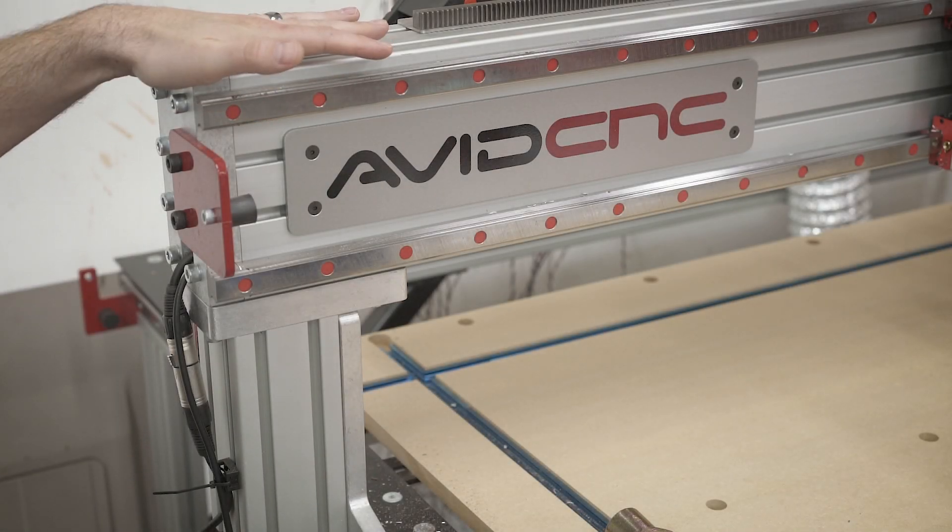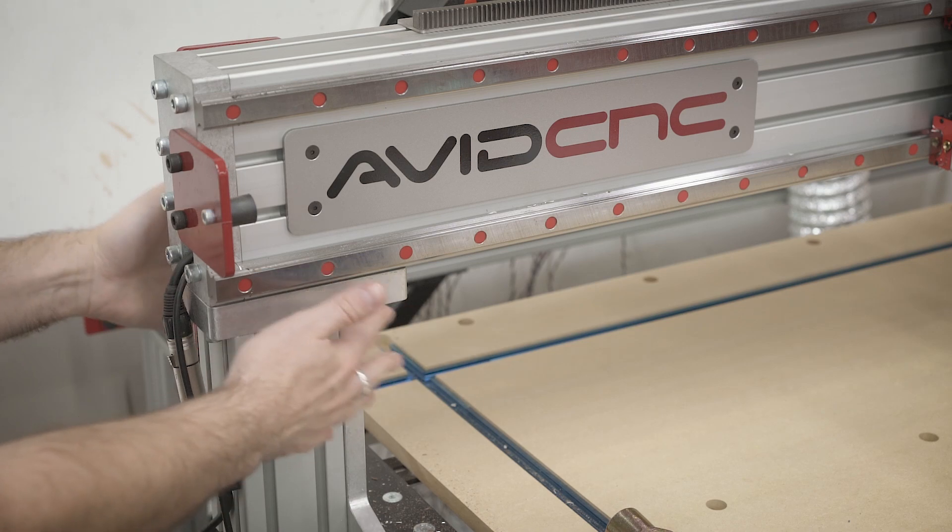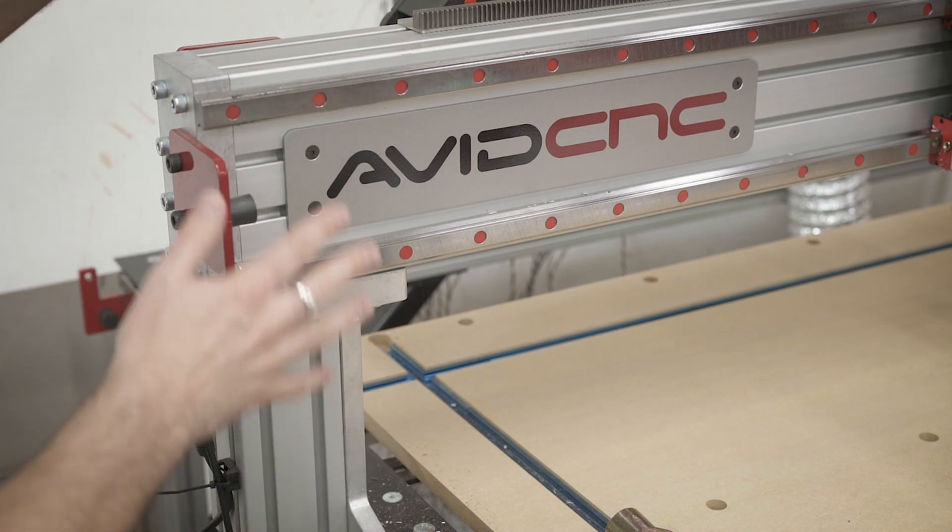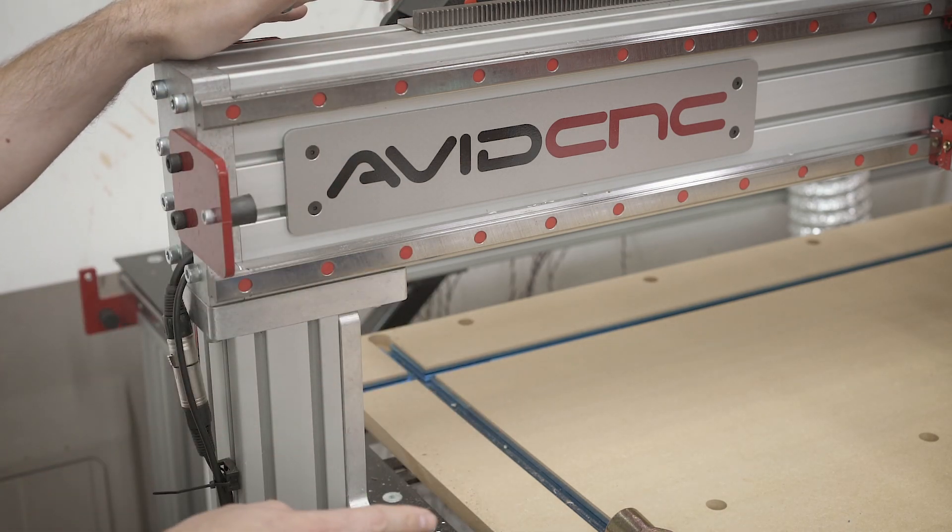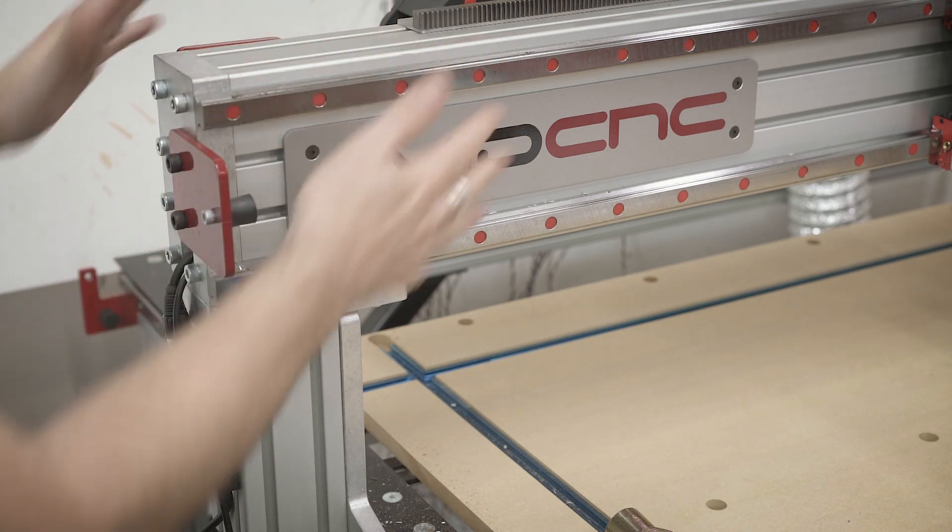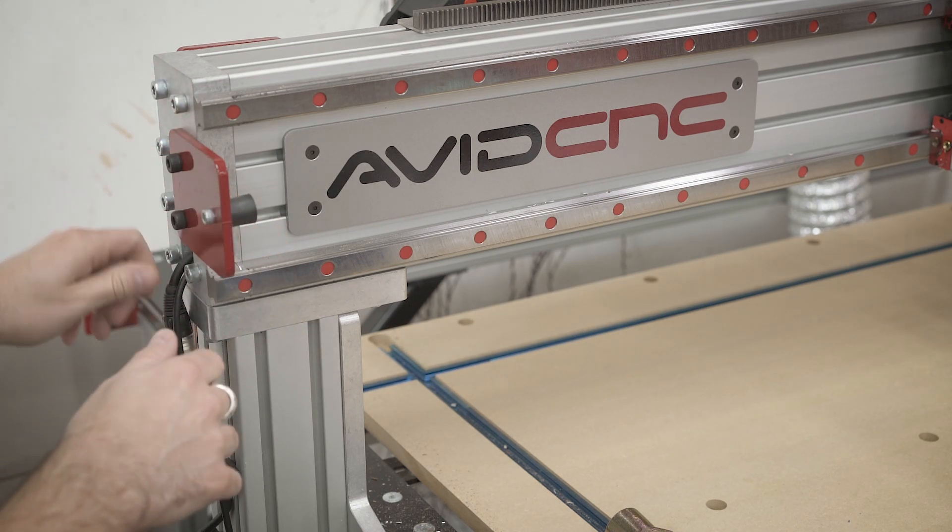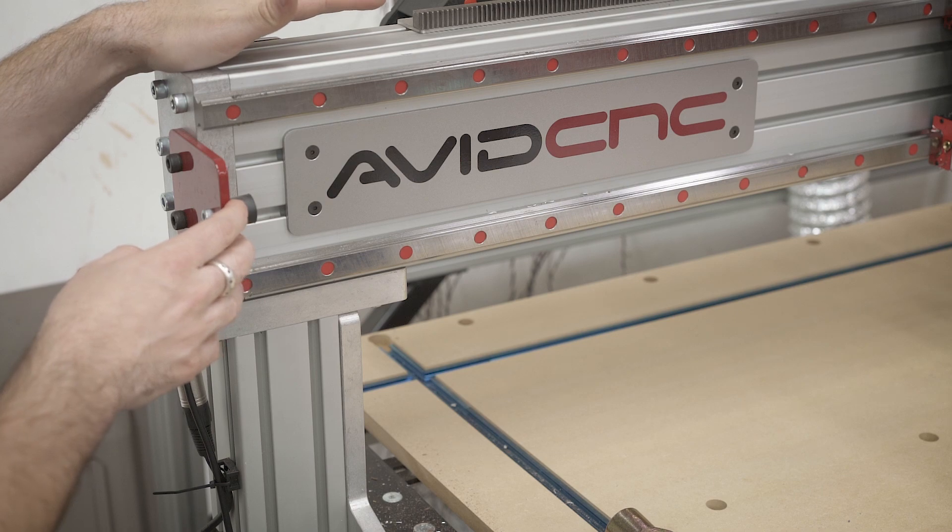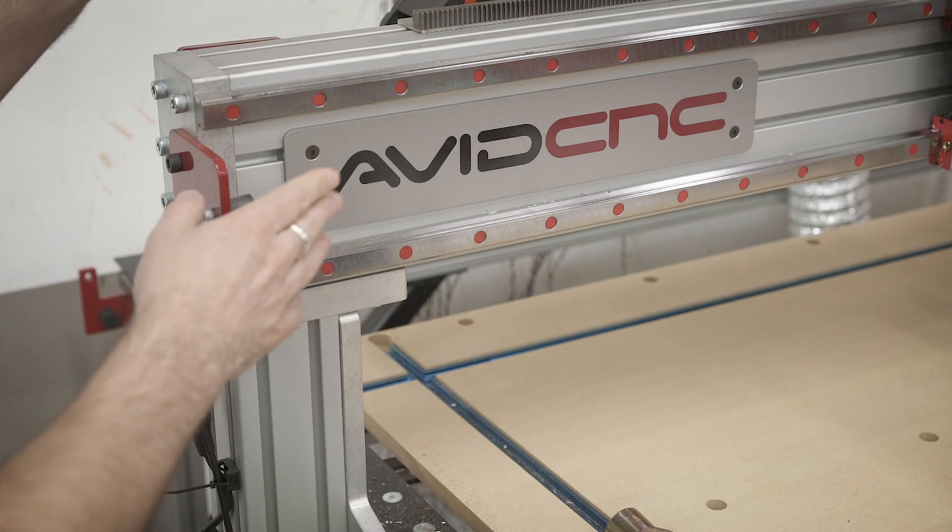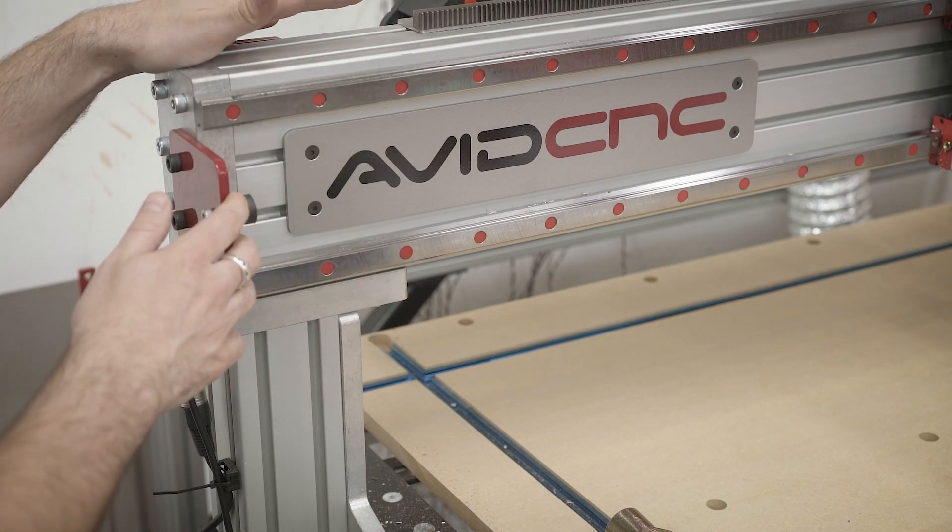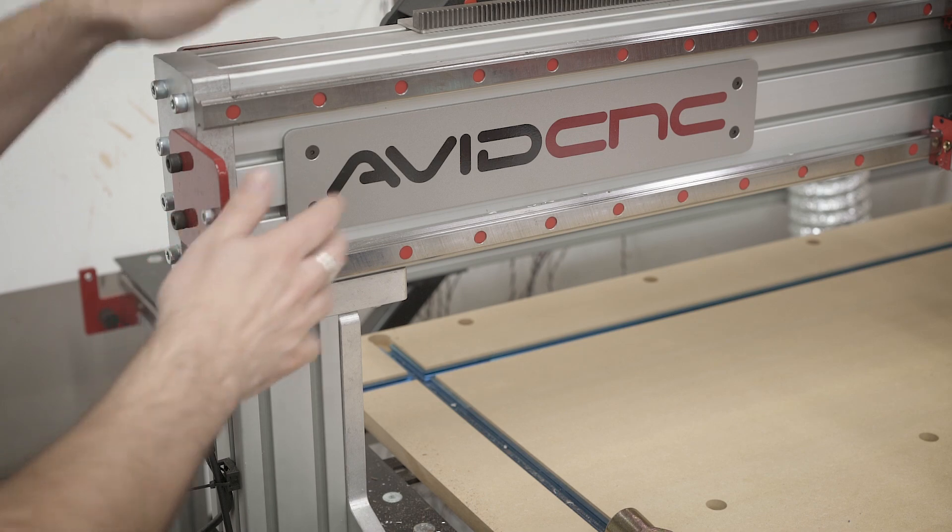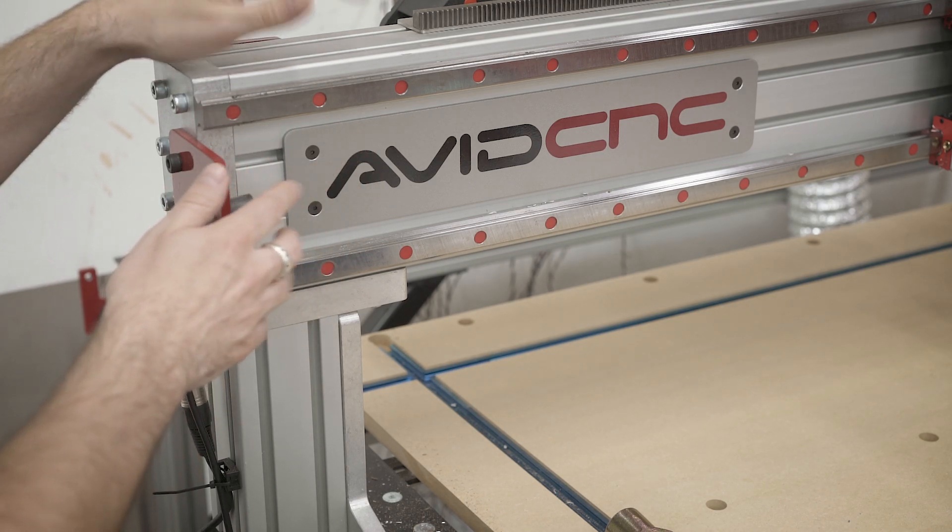So before we go any further with the actual tramming process you need to make sure that everything is tightened and bolted down. These screws, these screws, these screws, all the screws. If you have anything loose in your machine whatever we do in the tramming is going to be absolutely pointless and you're going to have to do it again. So go through everything and make sure that everything is all nice and tight. The other thing to point out is if you're going to do this and then eventually move the machine that is also going to be pointless. Make sure that the machine is in its final place and everything is as final as it can be because once you move the machine or do anything to it the tramming could actually get screwed up. So make sure that all of that is taken care of first before you start tramming.